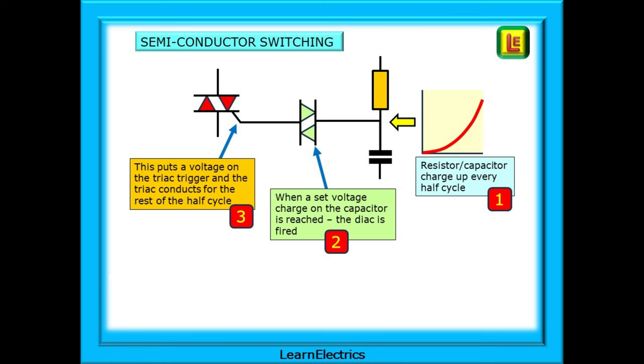This then is what we want the dimmer controls to do. First, when power is applied, the resistor capacitor combination will begin to charge up as at number one. At number two, when a set voltage or charge across the capacitor is reached, the DIAC will fire and send a signal to the TRIAC. Then at number three, the trigger voltage is put onto the trigger and the TRIAC begins to conduct. It allows current to flow through for all the rest of the half cycle, either positive or negative, and this allows the lamp to light up.